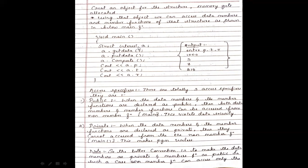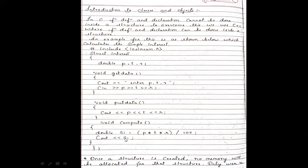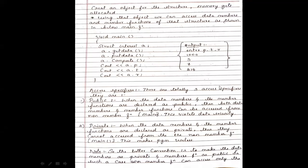Through the object, we first call the get_data function to get input from the user. Next, through the object, we call put_data which displays the principal, time, and rate values. Then we call the compute function to calculate the simple interest and print it. Using the dot operator with the object, we access both data members and member functions.